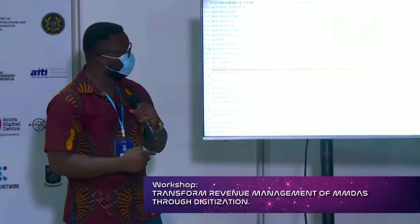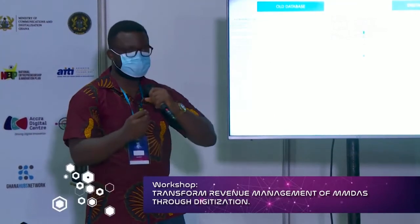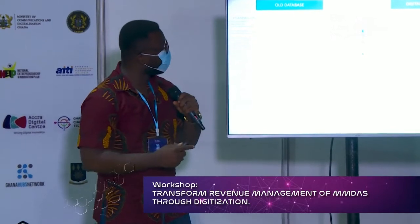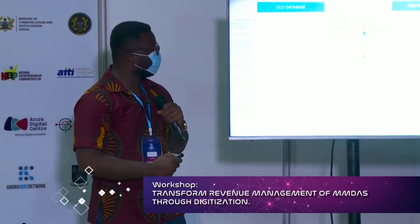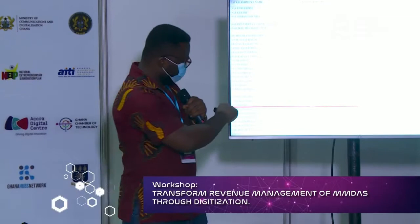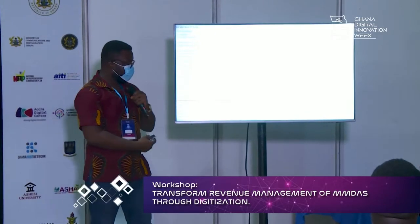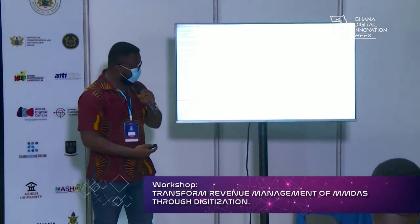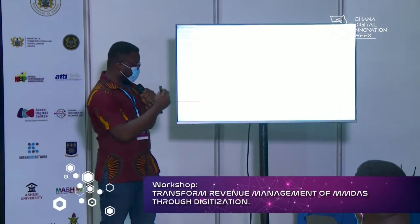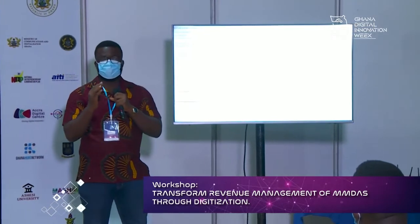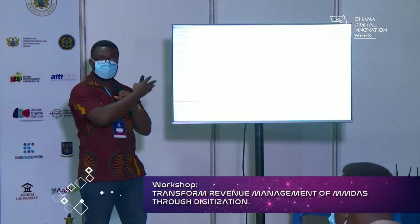To put this in better retrospect, we are going to have a look at the old data system and then the digital solution that we have developed. To the left you have the old database, and to the right you have the digital solution. Here we have what we call Olu Store, and in the old system the description of that particular revenue item was 'near VRA transformer at Kawakudi.' The question is: how does the revenue collector identify this store if he doesn't know where Kawakudi is? It was very difficult to identify the location based on this type of register.